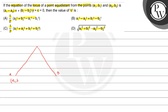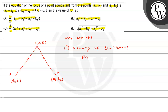Point A के coordinates हैं a1, b1 और दूसरे coordinates हैं a2, b2। एक point P मान लेते हैं जिसका locus हम ढूंढना चाहते हैं, जिसके coordinates alpha और beta हैं। Equidistant मतलब P से A की दूरी और P से B की दूरी बराबर है।